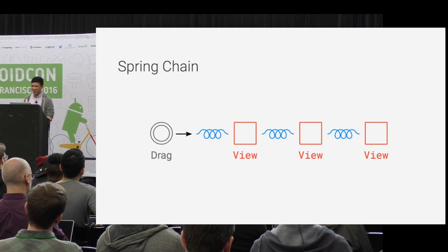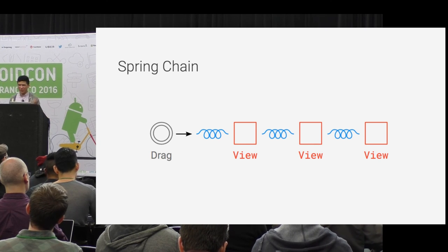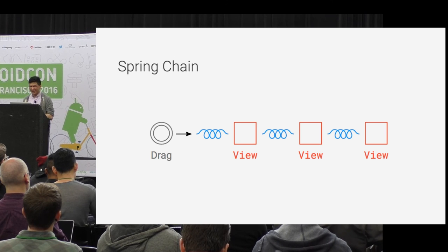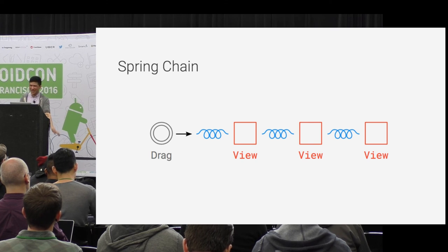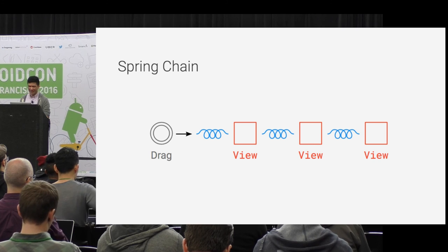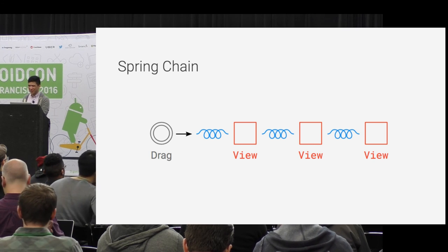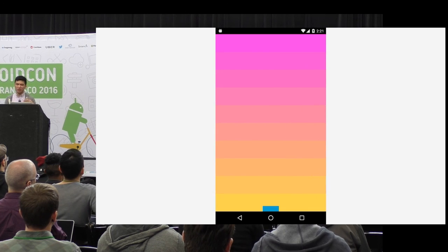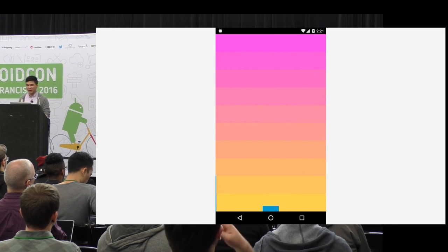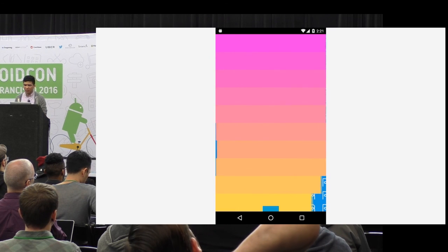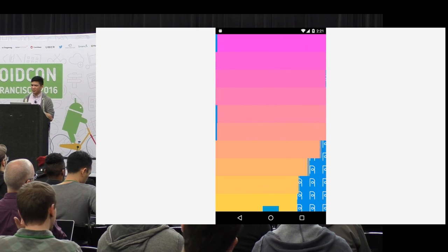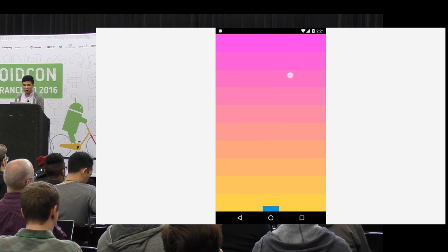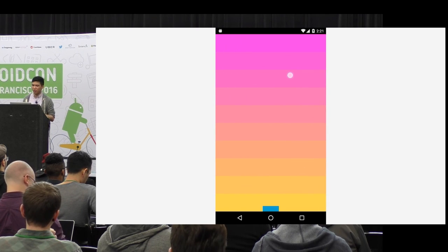Going back to chat heads, they have a spring chain with multiple heads. You might be reminded of control systems or mechanics class with springs coupled together and differential equations. But luckily we don't have to worry about that - the solution is integrated for us by Rebound. The spring chain animation in Rebound right now is very specific to moving in one direction, though it might be possible in two directions.